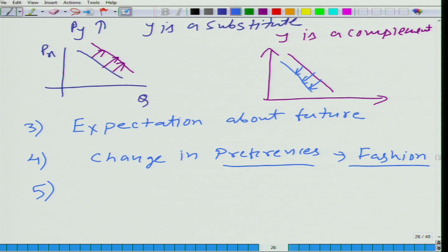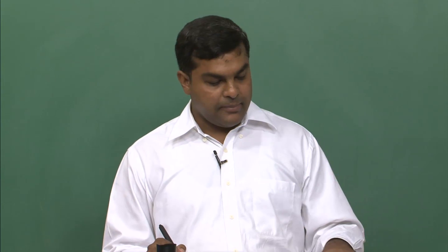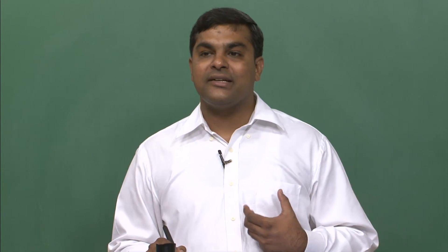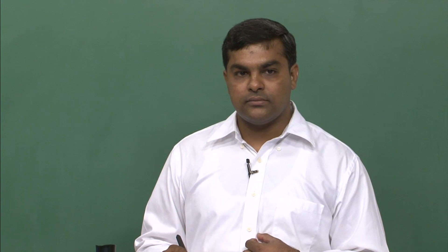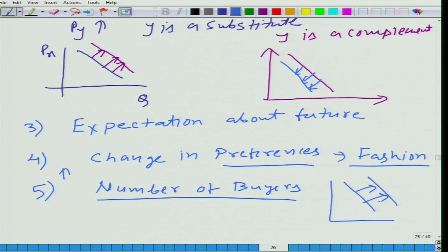And last, or you can also think of more, but the last one that I am going to discuss is number of buyers. One thing also you should notice - all other factors above I described impact not only market demand, but they also impact individual demand. But here now we are talking about number of buyers. It does not impact individual demand, it impacts market demand. So if we have more and more people in the market buying the same good, what would happen to the demand curve? As number increases, demand would increase. So it would shift again rightward. Let us say n is the number, as n increases. Is it clear?